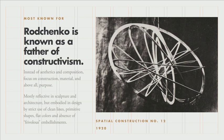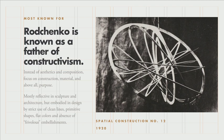This piece is called Spatial Construction No. 12, from 1920. You can see that it's a piece of plywood that he's cut into concentric circles and basically allowed the material to dictate the form and the shape. It's basically his comment on the planetary orbits — it's kind of suspended in air, like a mobile. The constructivist movement basically used clean lines, primitive shapes, flat colors, and just the complete absence of frivolous embellishments.